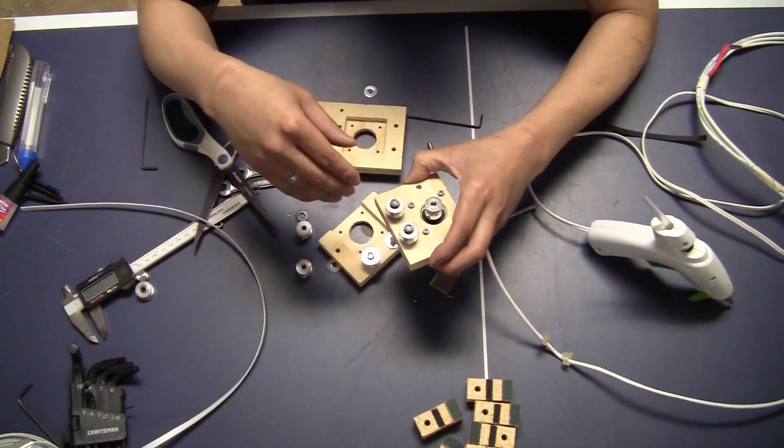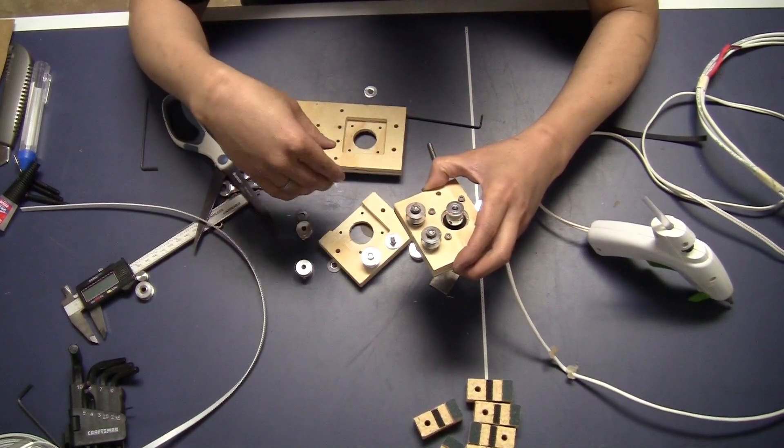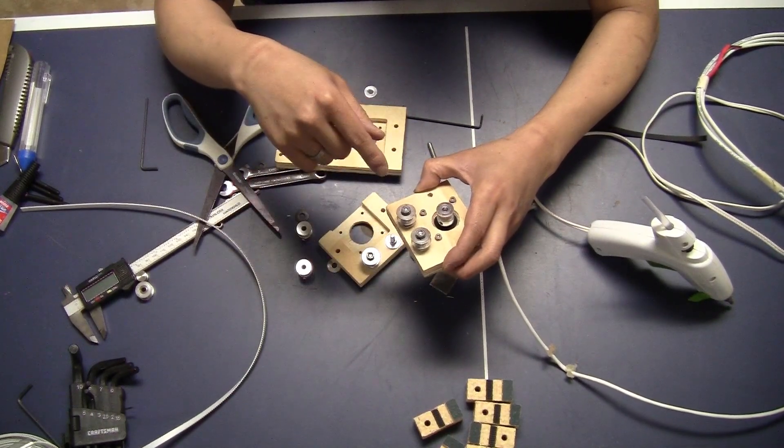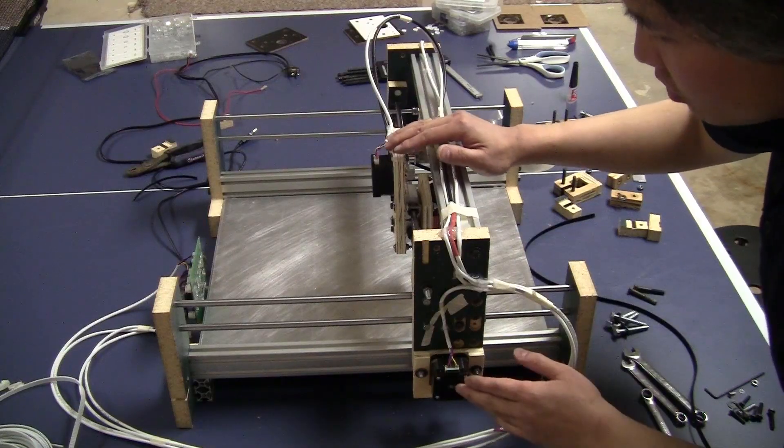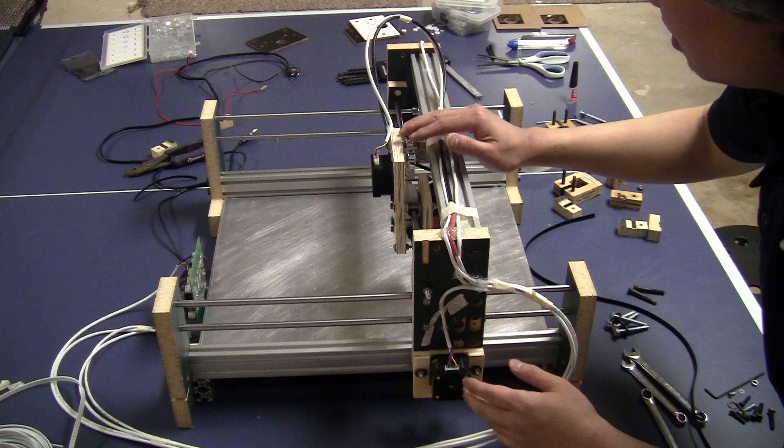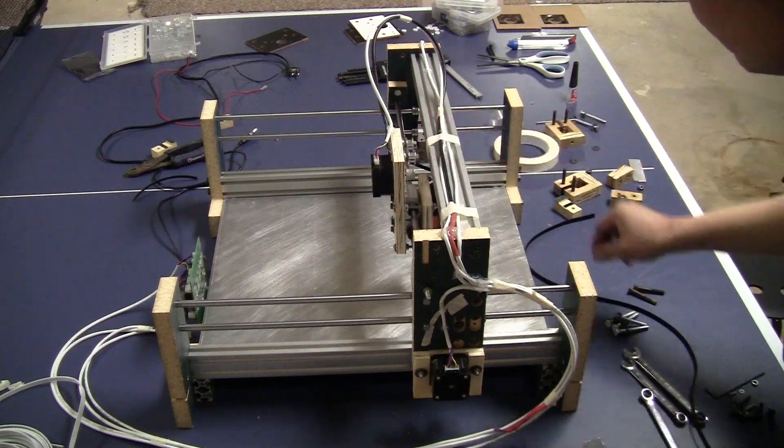So now I just need to finish all these three setups and then install them on the machine. And then I will show you how I run the belt. Now I just mount all the stepper motors on the frame. The next step is just to run the belt. This will be very easy.